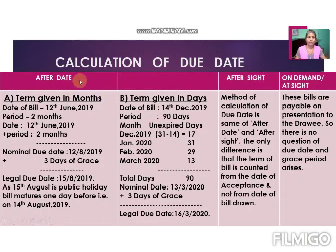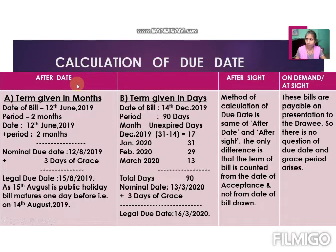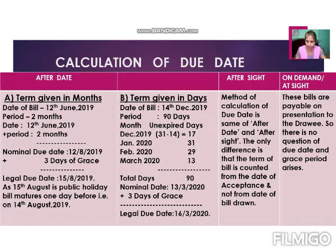The first difference: after date means the period of the bill starts after the date of the bill — that is, when the bill is drawn by the drawer. After sight means the period starts from the date the bill is accepted by the drawee. On demand means there is no particular period given — on demand or at sight means whenever the drawer presents the bill, at that time the drawee has to pay. These are the three differences between after date, after sight, and on demand.